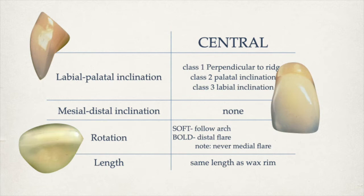There are two rotations you could set up. Soft center: you're basically making the central teeth follow the arch. For the bold central setup, you're making the distal portion of the central teeth flare out. Note that you do not make any major flaring on the central teeth. The length will be the same as the occlusal rim or wax rim.